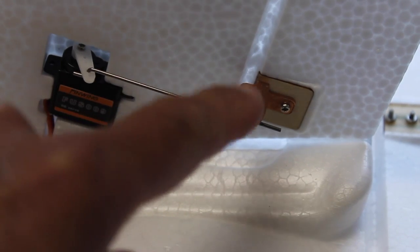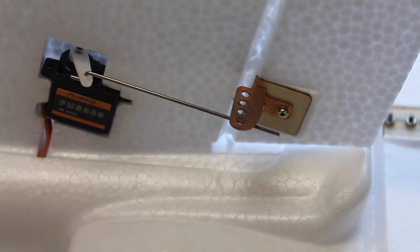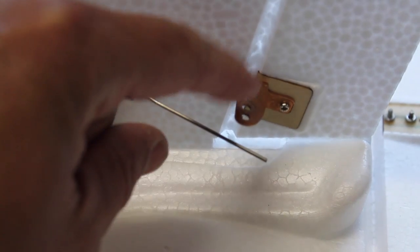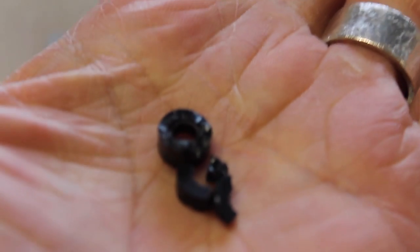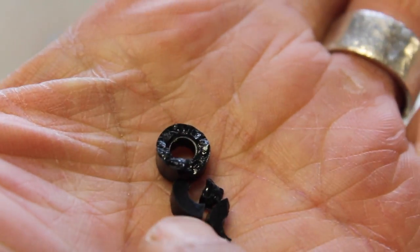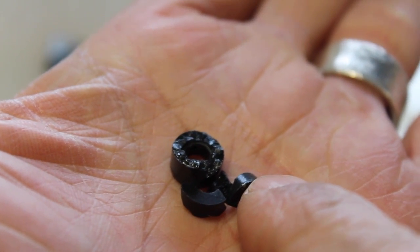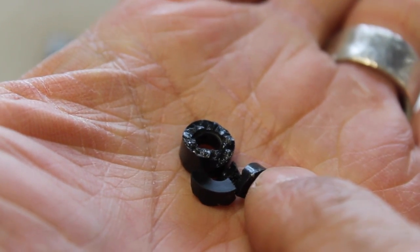You're looking at the servo and control horn for the rudder of my Finwing Penguin. The servo rod normally connects to this control horn using this plastic piece. It almost looks like a little wheel or tire that you screw and mount that servo rod into place.